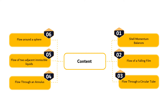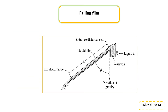Previously, we discussed the module overview and shell momentum balances. In this segment, we will discuss the flow of a falling film. Let's consider the flow of a liquid down an inclined flat plate of length L and width W as shown in the figure. Such films have been studied in connection with wetted wall towers, evaporation and gas absorption experiments, as well as applications of coatings.